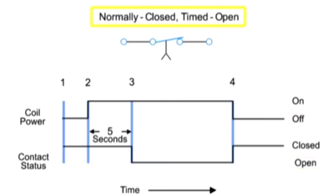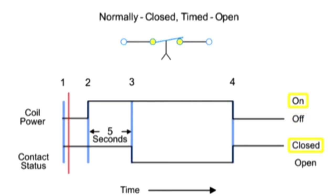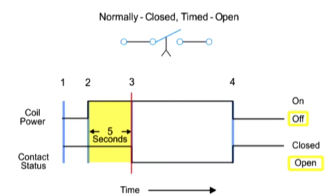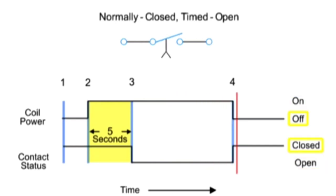Next, we have the normally closed, timed open contact. This type of contact is normally closed when the coil is unpowered or de-energized. The contact is opened with the application of power to the relay coil, but only after the coil has been continuously powered for the specified amount of time — in this case, five seconds. Thus, the contacts open five seconds after the coil is energized and close immediately when the coil is de-energized.